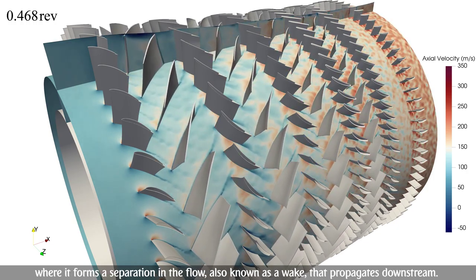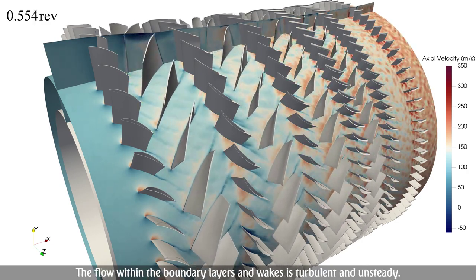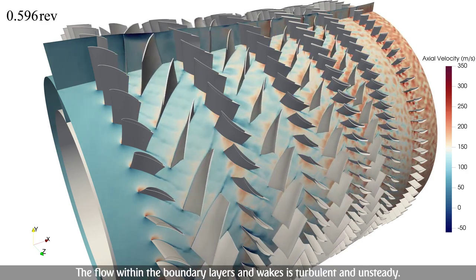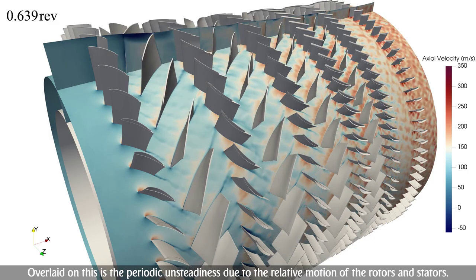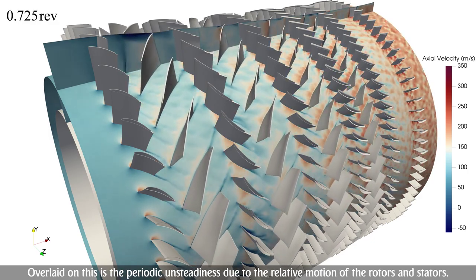Where it forms a separation in the flow, also known as a wake, that propagates downstream. The flow within the boundary layers and wakes is turbulent and unsteady. Overlaid on this is the periodic unsteadiness due to the relative motion of the rotors and stators.